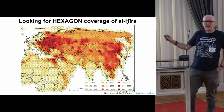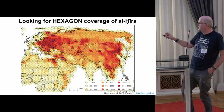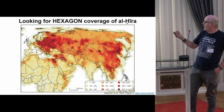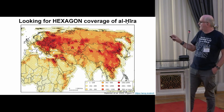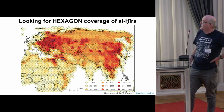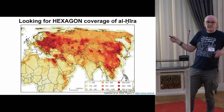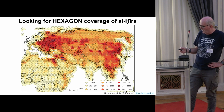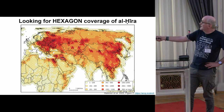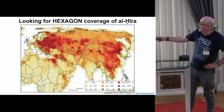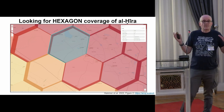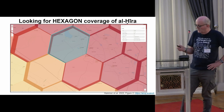Periodically throughout the mission, film was returned to earth for processing via little recovery buckets. Emily Hammer and Jason published a paper in Antiquity in 2022, and they have an online site showing Hexagon coverage. It's an American system, so not surprisingly it was looking at eastern Europe, the Soviet Union, southeast Asia, and the Middle East. Each hexagon on the map is color-coded for the number of images covered. Zooming in, Al-Hira is in Iraq, and there are around 1,000 images covering that area — giving a problem of deciding which one to use.